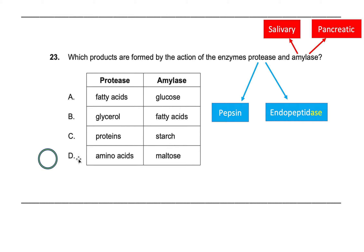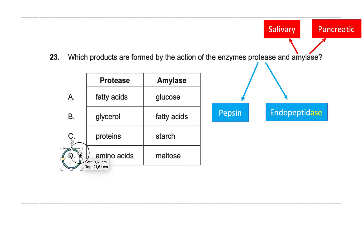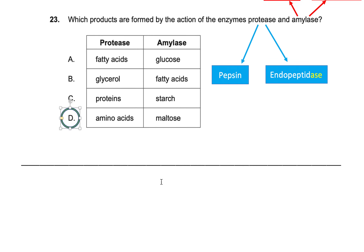Option D must be correct — let's confirm. When protease binds with its substrate, proteins, it breaks them down into amino acids, which is the product. So far so good. When amylase binds with its substrate, starch, and breaks it down into the smallest units, it can produce maltose. Sometimes it gets an even smaller form called glucose. Maltose is a slightly bigger form of glucose, but it is a valid product of amylase acting on starch, so D is correct.